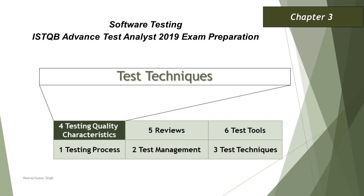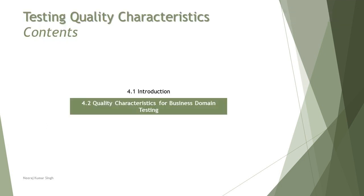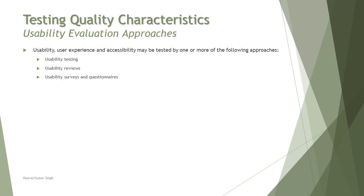Hello friends, welcome back to the tutorial on ISTQB Advanced Test Analyst. We are in Chapter 4, looking at topic 4.2 Part 2 of usability testing. The previous tutorial was Part 1; as it was a long topic, we split it into two tutorials. In this tutorial we'll be talking about usability evaluation approaches — basically how usability testing can be conducted and how usability of a product can be measured and evaluated. We have three different approaches practiced in organizations and industries: usability testing, usability reviews, and usability surveys and questionnaires.